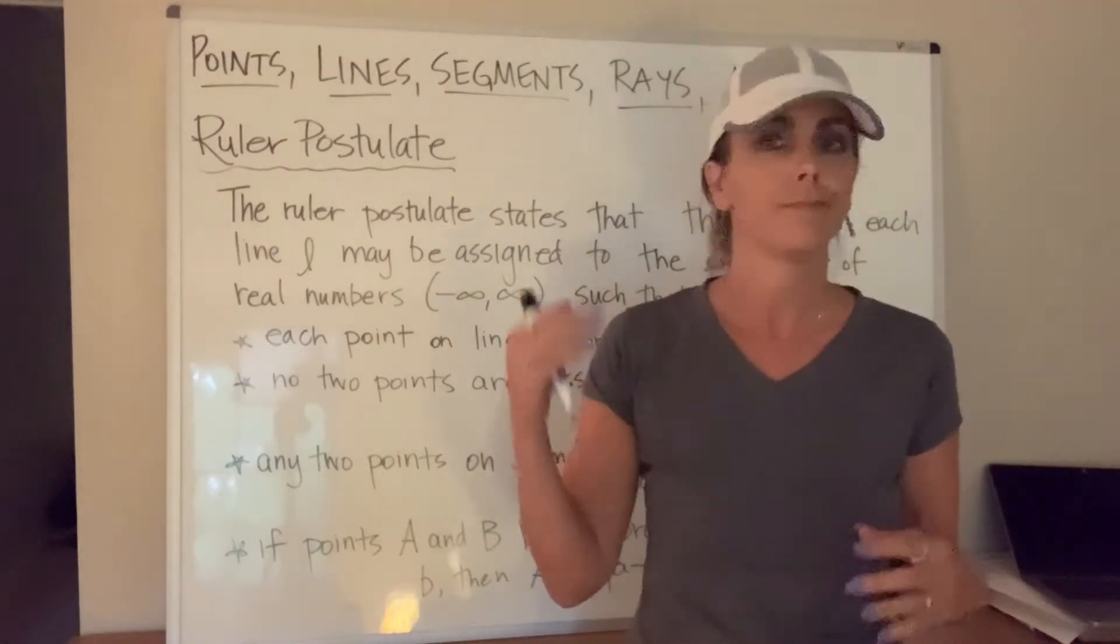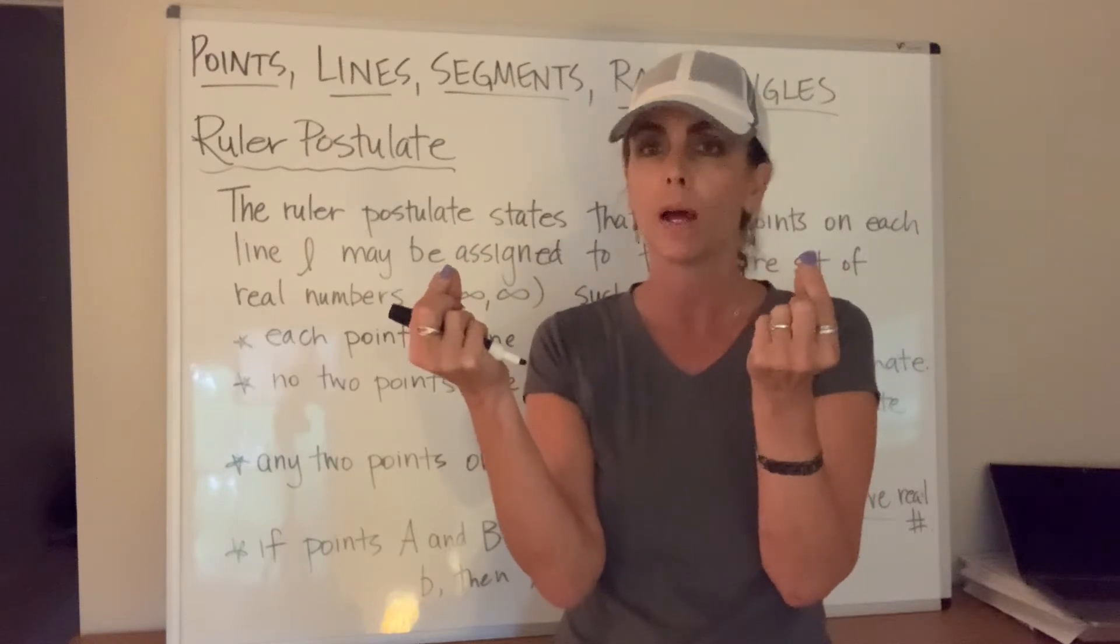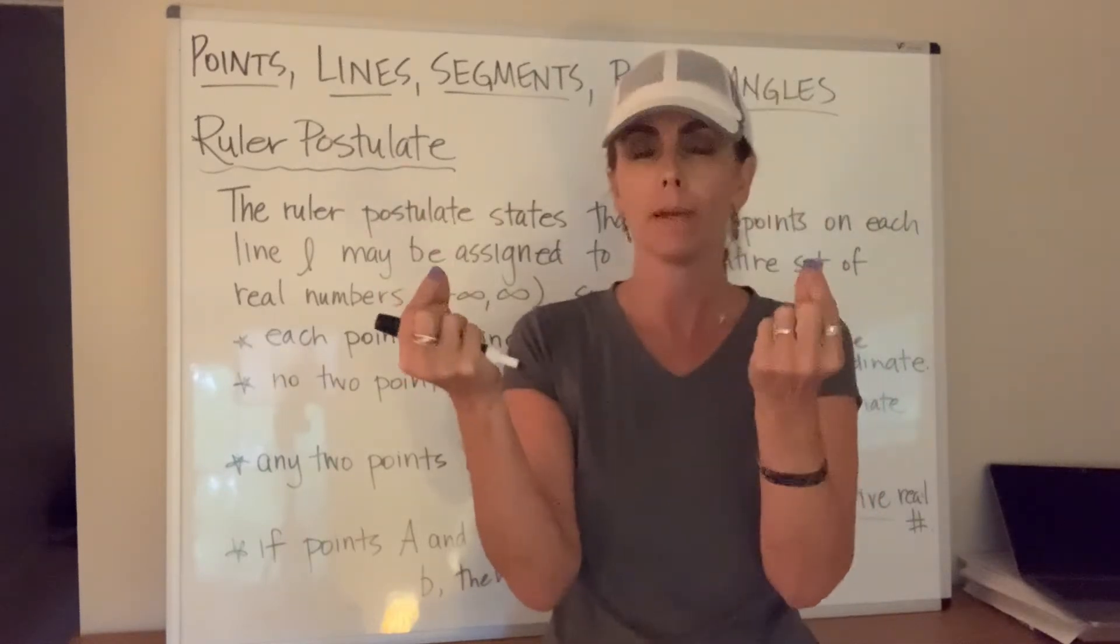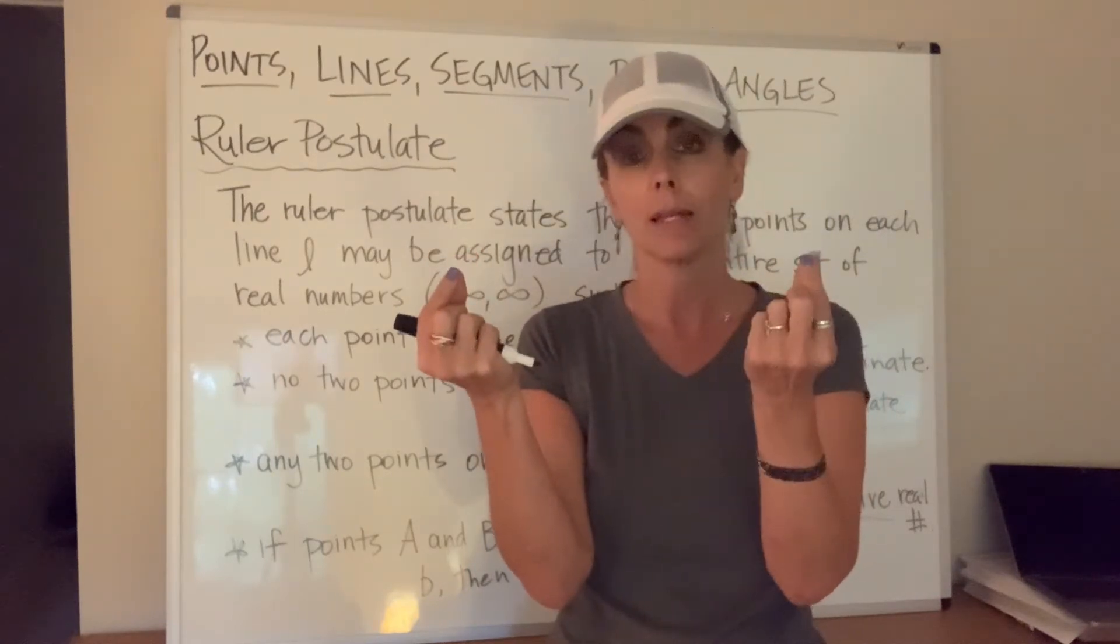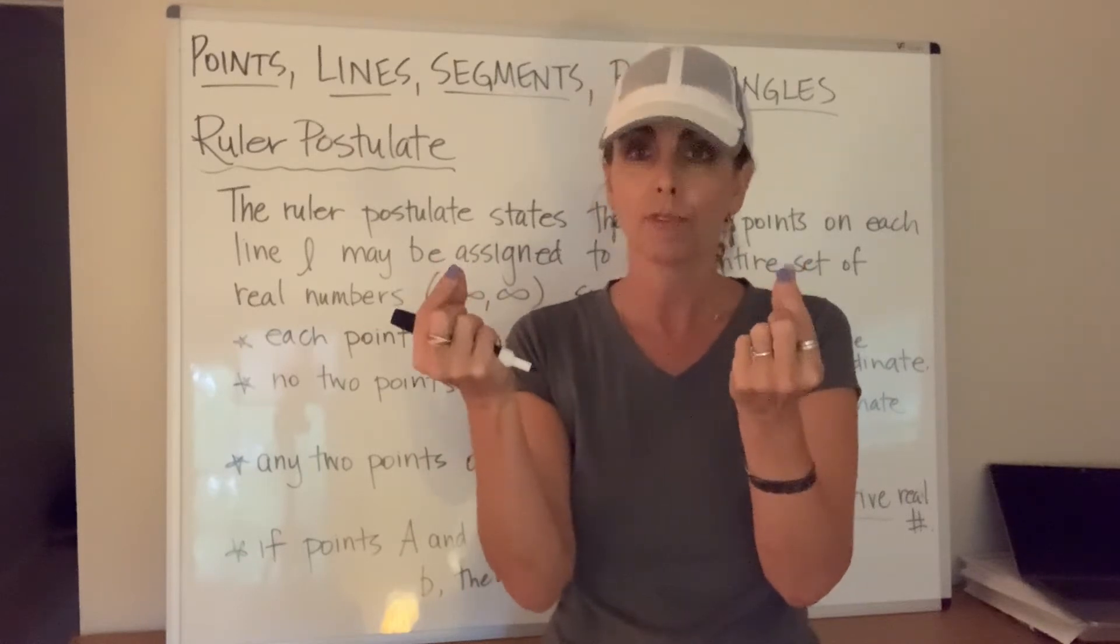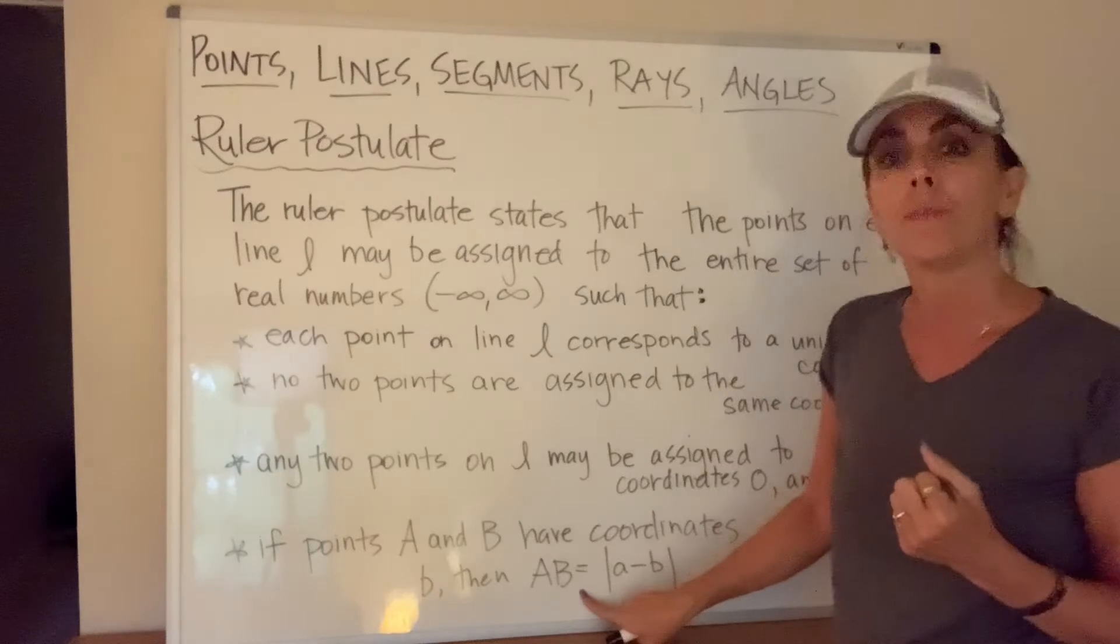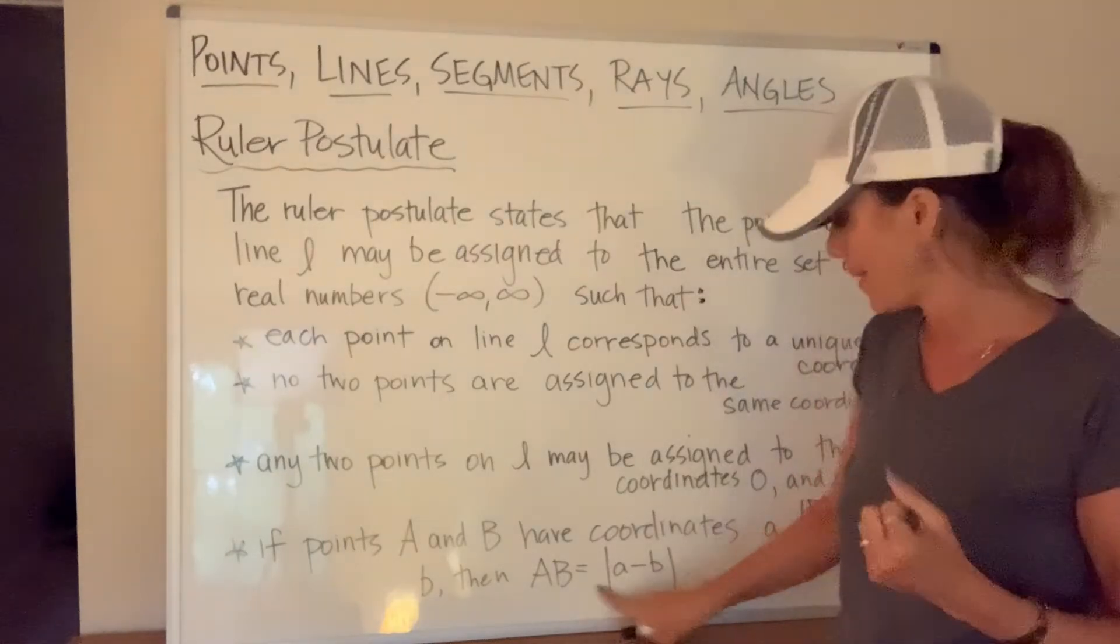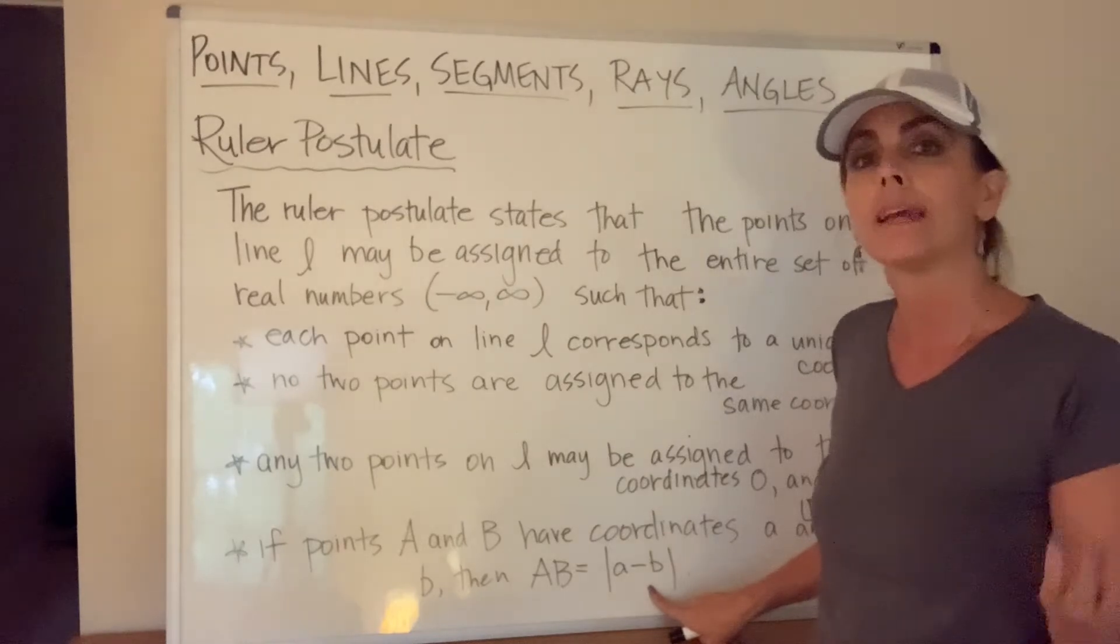Okay, so little a and little b are on the number line somewhere and they correspond with point big A, big B. I can find the distance between big A and big B by subtracting the two coordinates and taking the absolute value. Okay, so the distance between A and B can be found by the difference between the coordinates and taking the absolute value.